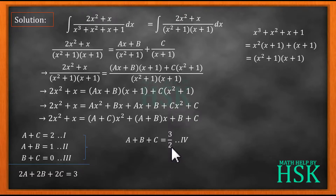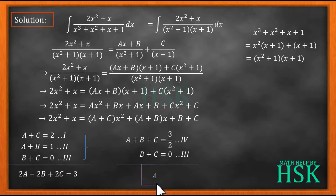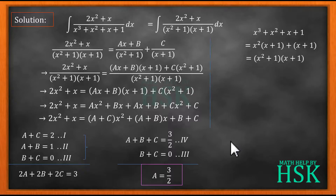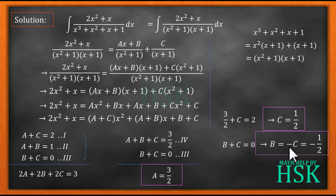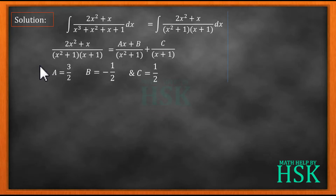Taking equation 4 (A + B + C = 3/2) and subtracting equation 3 (B + C = 0), I get A = 3/2. Since A = 3/2, substituting into equation 1 gives 3/2 + C = 2, so C = 1/2. From equation 3, B + C = 0, so B = −C = −1/2. This is how I have calculated the values of A, B, and C.